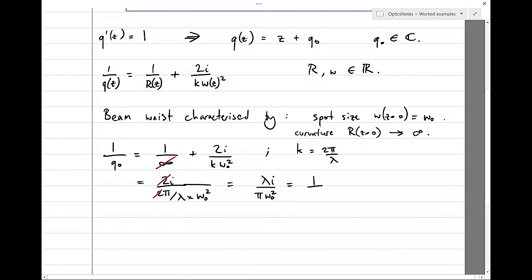So it's just i on Z of R, because Z of R was defined as pi times omega 0 squared, sorry, W0 squared on lambda. So that means that we know this integration constant now. We know what Q0 is.